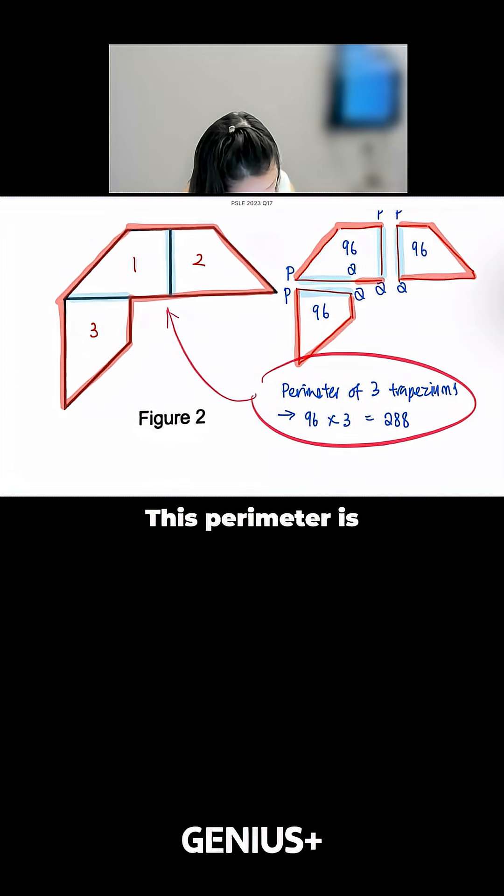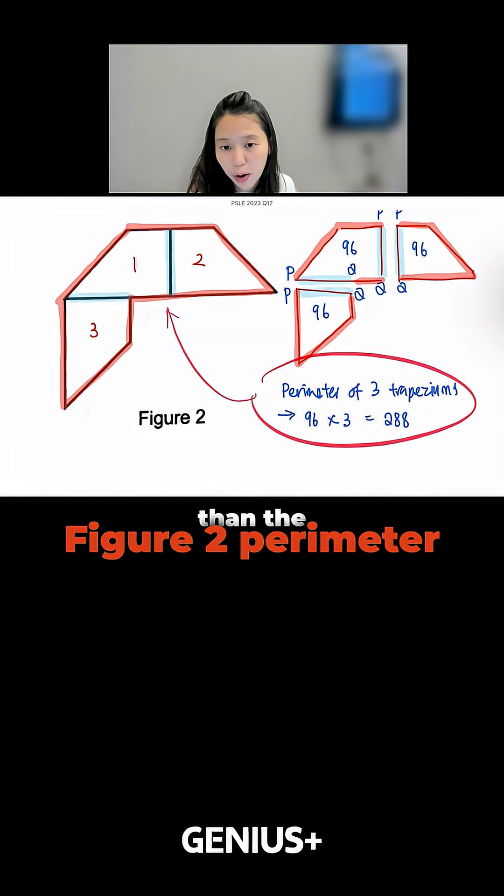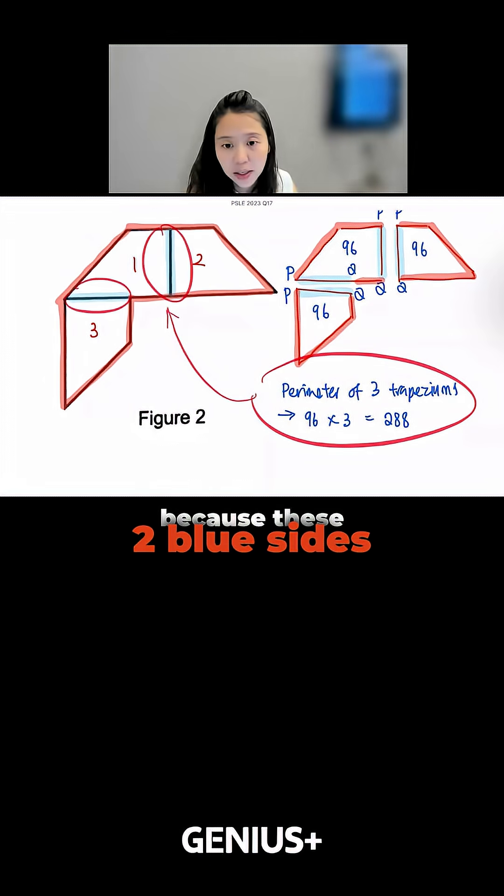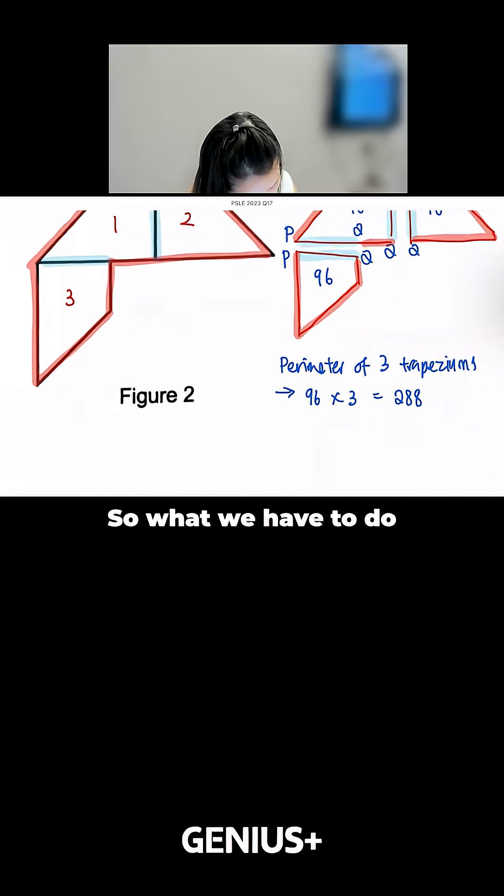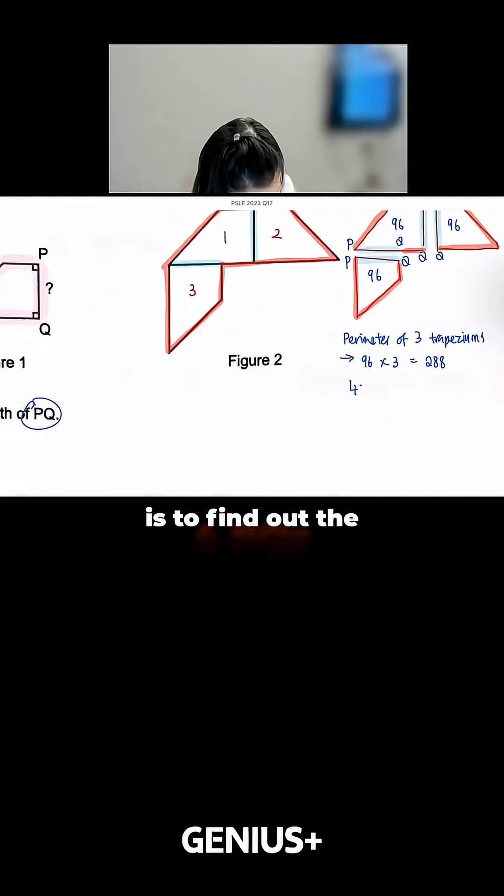This perimeter is more than the Figure 2 perimeter because these 2 blue sides, when you expose them, it becomes 4 blue, 4 PQ. So what we have to do is to find out the 4 PQs.